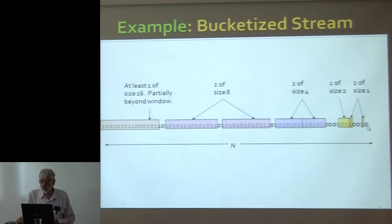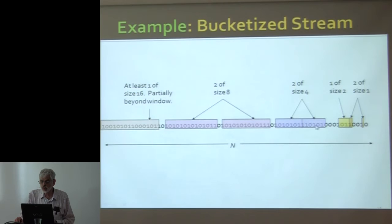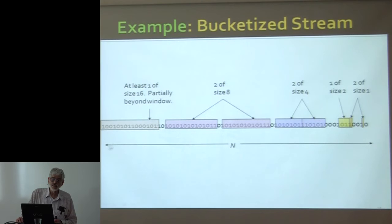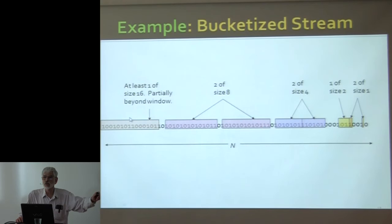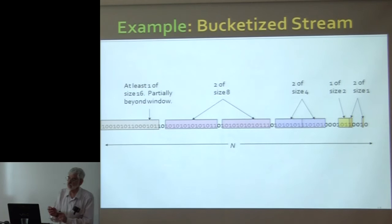Here's an example stream — this is the most recent bit, it's a zero, and we go back in time. We have two buckets of size one: the first one here, the second one there. Then one bucket of size two, which consists of a one, zero, one. Then two buckets of size four. And then buckets of size eight and sixteen. That last size-16 bucket is already partially outside the window. Any previous bucket has its end time prior to the n most recent inputs, so it's gone — we have no record of any buckets outside that window.